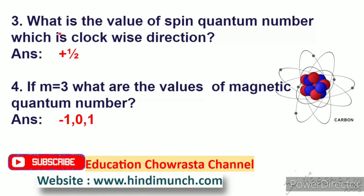Next question: what is the value of spin quantum number in the clockwise direction? Spin quantum number yokkha value, d-aniki clockwise direction lo. Answer: minus 1/2.